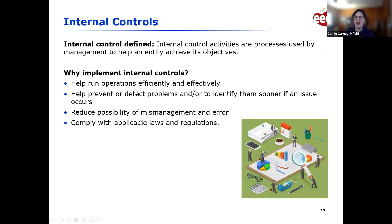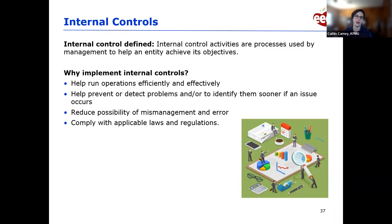Now we're going to talk about internal controls. Internal controls are activities and processes used by management to help an entity achieve its objectives. They can take many different forms and are for everyone. Why implement them? They help your child care organization work better — operations run more efficiently and effectively. They can help prevent or detect problems sooner, reduce possibilities of mismanagement and error, and help you comply with applicable laws and regulations. Think of this like checks and balances. Internal controls are like organizational culture — everyone has a role to play and it requires internal communications.